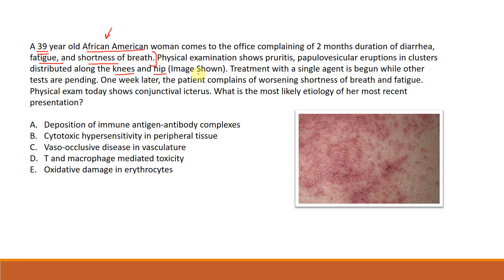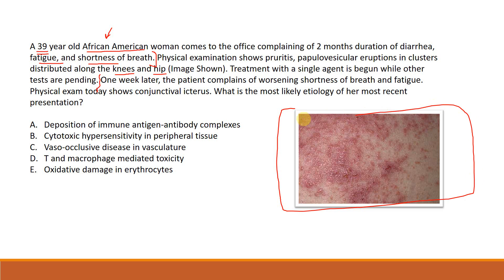Treatment has begun with a single agent while other tests are pending. At this point, I mentally summarize: this woman likely has some kind of malabsorptive disorder also associated with a rash. The one that comes to mind immediately is celiac disease, which causes villous atrophy of the intestinal lumen leading to malabsorption and is classically associated with a rash.